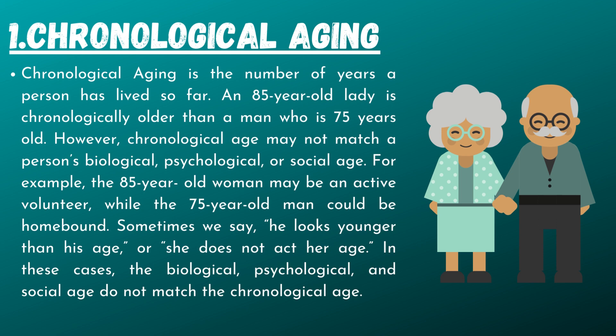Chronological age may not match a person's biological, psychological, or social age. For example, an 85-year-old woman may be an active volunteer, while a 75-year-old man could be homebound. Sometimes we say he looks younger than his age, or she does not act her age. In these cases, the biological, psychological, and social age do not match the chronological age.